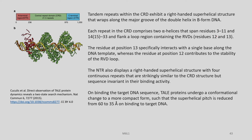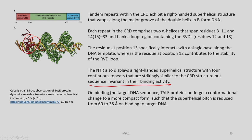The NTR also displays a right-handed super-helical structure with 4 continuous repeats that are strikingly similar to the CRD structure, but sequence-invariant in their binding activity. This is very important: these 4 continuous repeats are similar to the CRD structure and they bind to DNA, but they are sequence-invariant — they are not specific — and therefore they can initiate binding easily.